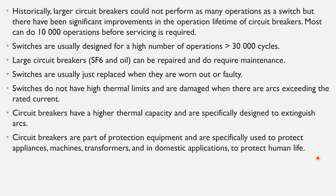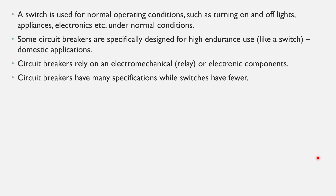Circuit breakers are part of protection equipment and are specifically used to protect appliances, machines, transformers, and in domestic applications even to protect human life. A switch is used for normal operating conditions such as turning on and off lights, appliances, and electronics.